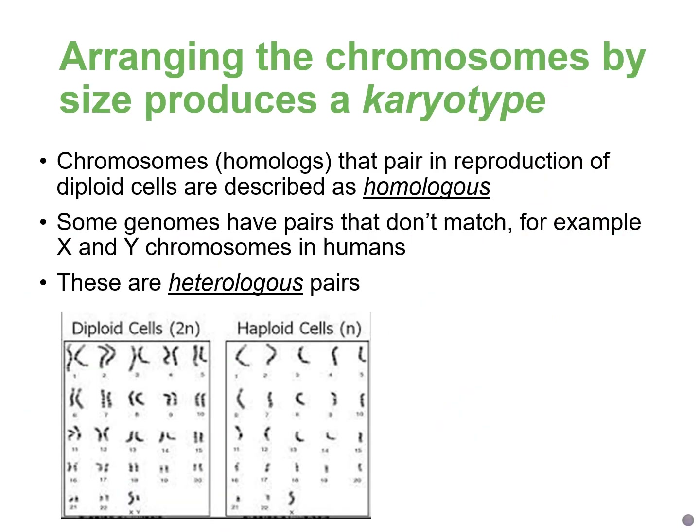That picture is called a karyotype and chromosomes in a karyotype are lined up based on their chromosome number, which is based on the size of the chromosome. Chromosome one is the largest. The last pair, chromosome 22, are the smallest. And the 23rd pair are the sex chromosomes — XX or XY.